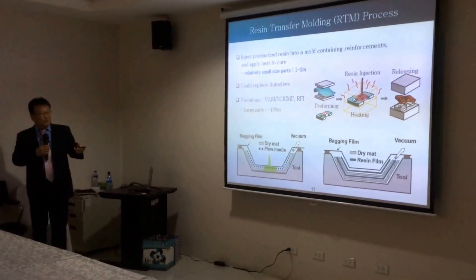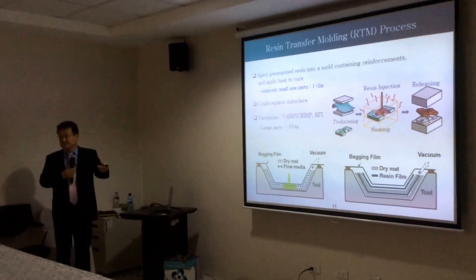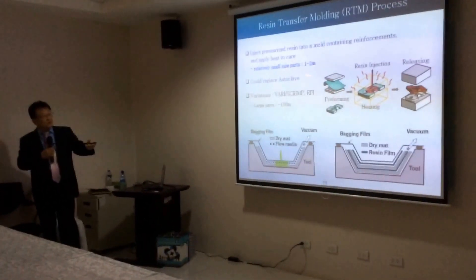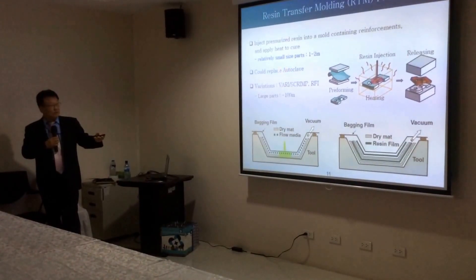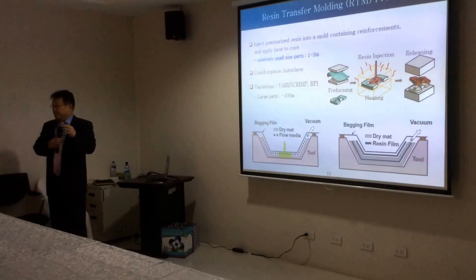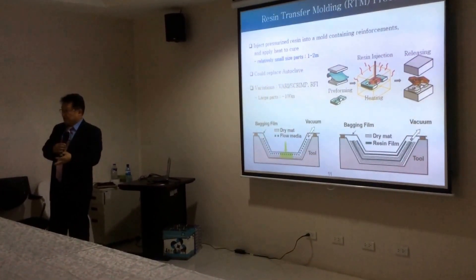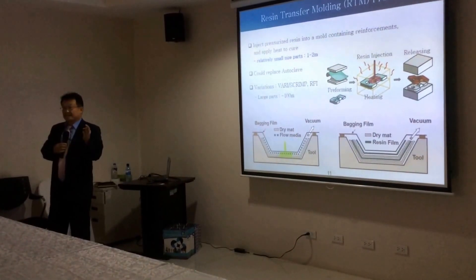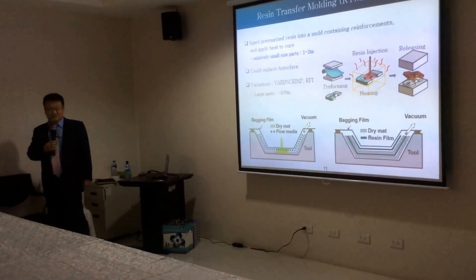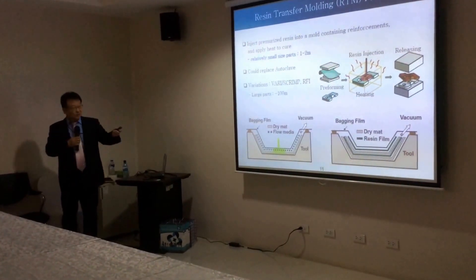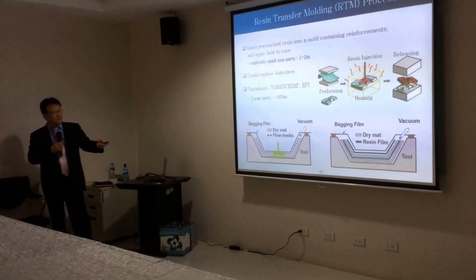With RTM technology, you place the pre-form into a mold, inject resin, apply heat, then release to get the part. RTM is typically used for parts about one to two meters long and can replace autoclave processing. An autoclave is a chamber that applies pressure, heat, and vacuum simultaneously — very expensive, about $200,000 for a room-sized unit. For larger parts we can use vacuum-assisted resin injection or SCRIMP.